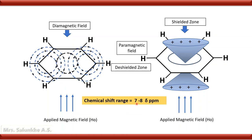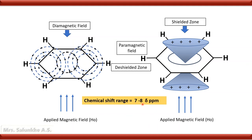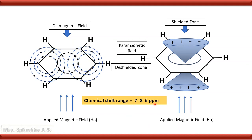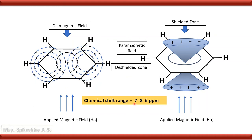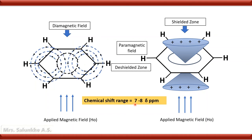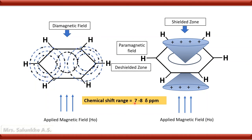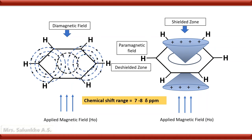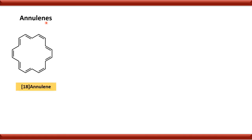The chemical shift range for aromatic protons is 7 to 8 delta ppm, which is the characteristic value for aromatic protons. When protons are present on an aromatic ring, their chemical shift values are in the range of 7 to 8 delta ppm. Now we look at chemical shift values in case of annulenes. Annulenes are cyclic conjugated compounds. If a cyclic conjugated compound contains 4n+2 pi electrons, then it is aromatic. 18-annulene has 18 carbon atoms, a molecular formula of C18H18.